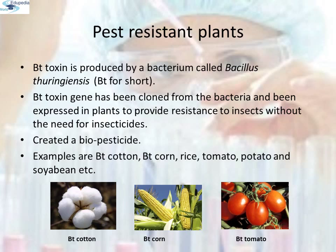GM plants have been useful in many ways. We will study in detail the production of pest resistant plants, which could decrease the amount of pesticides used. Bt toxin is produced by a bacterium called Bacillus thuringiensis. The Bt toxin gene has been cloned from the bacteria and expressed in plants to provide resistance to insects without the need of insecticides — in effect creating a bio-pesticide. Examples are Bt cotton, Bt corn, rice, tomato, potato, soybean, etc.